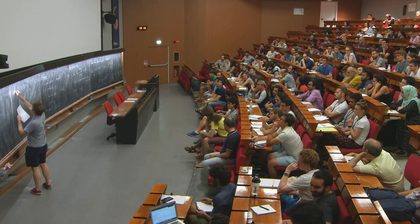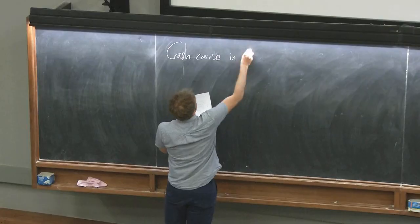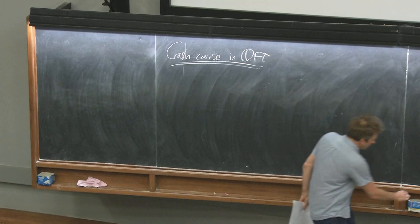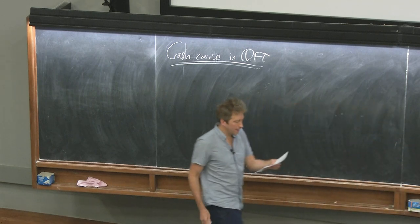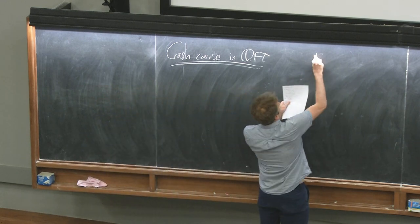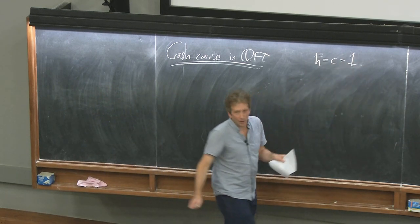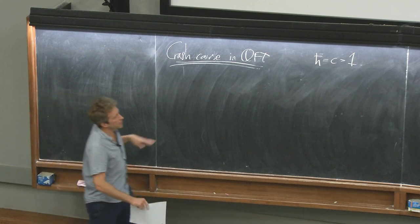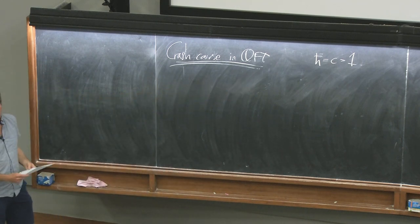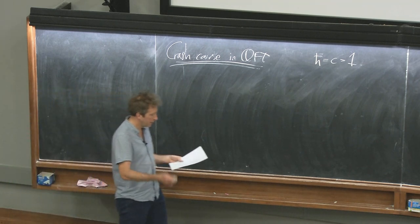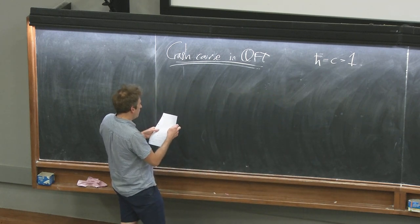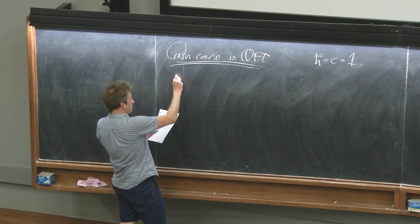So let me now go to the next section, which is a sort of crash course in QFT - or rather, setting some notation for what we're going to say later. We're interested in relativistic quantum field theories. It's natural to set h-bar and c to one and think about things having certain mass dimension.